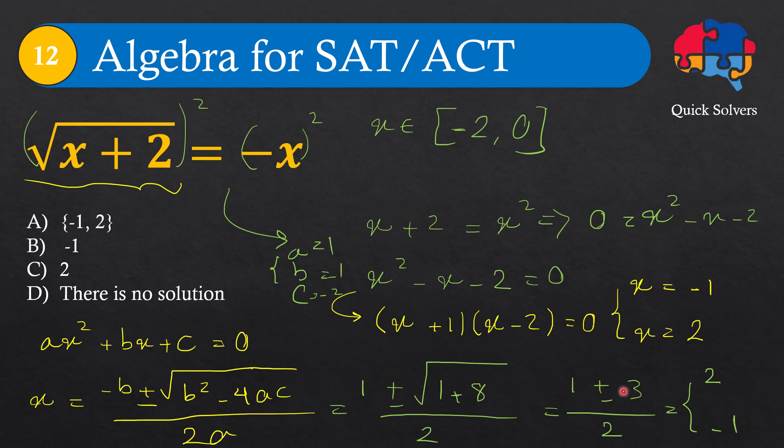Since we already knew that x should be in the range of minus 2 to 0, the answer x equals 2 is not valid, and the only answer is x equals minus 1. So B is the answer.